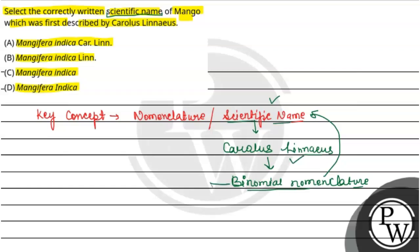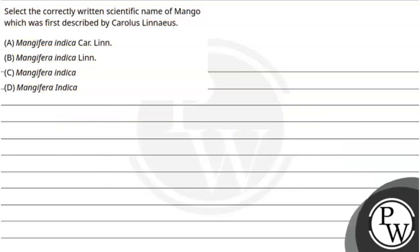So what does binomial nomenclature mean? Two taxa are present here: genus and species. The scientific name is made of only these two things — genus and species. Carolus Linnaeus gave this system of binomial nomenclature. If we look at the options for mango's scientific name, the scientific name of mango is Mangifera indica.